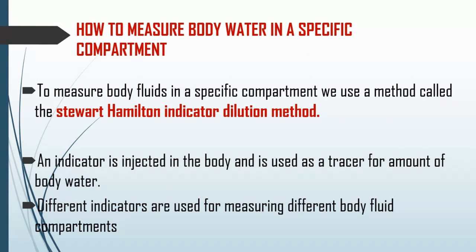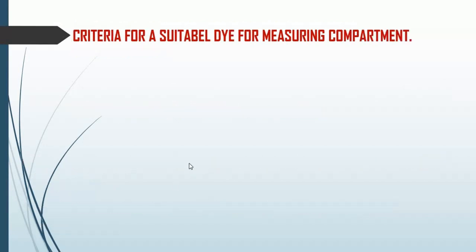Now let's move on to measuring body water in a specific compartment. To measure body fluids in a specific compartment, we use a method called the Stewart-Hamilton indicator dilution method. An indicator is injected into the body and used as a tracer for the amount of body water in the compartment you want to measure. Different indicators are used for measuring different body fluid compartments.